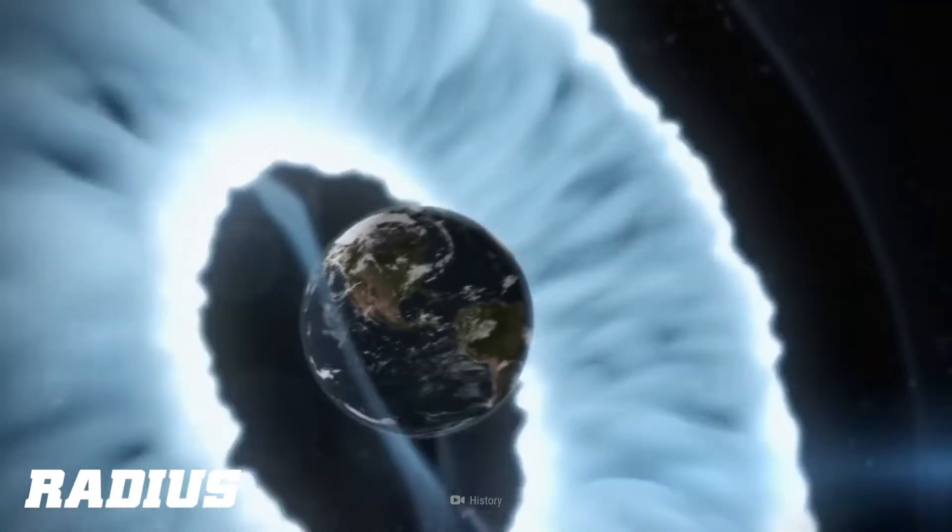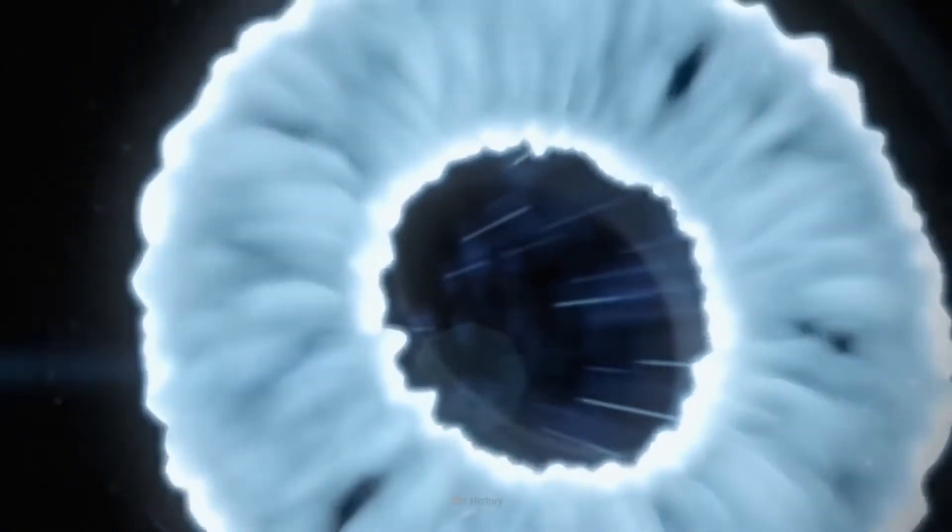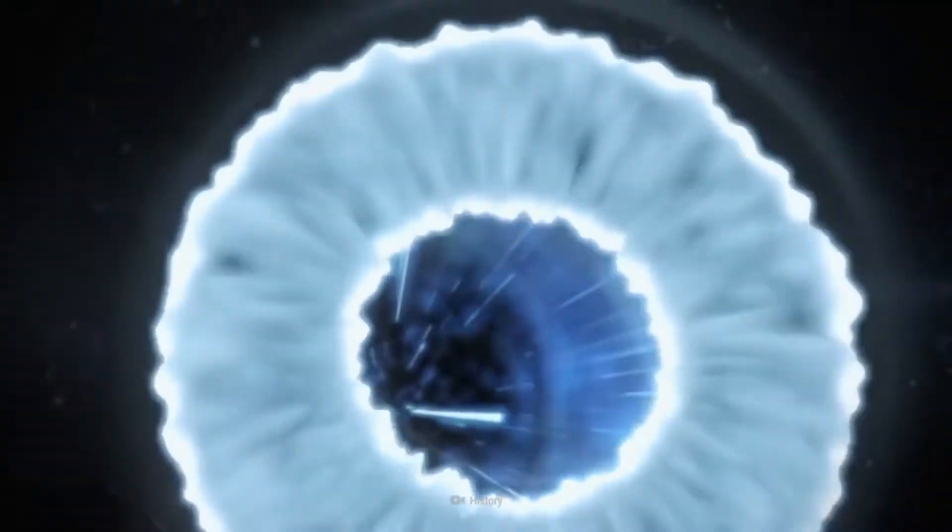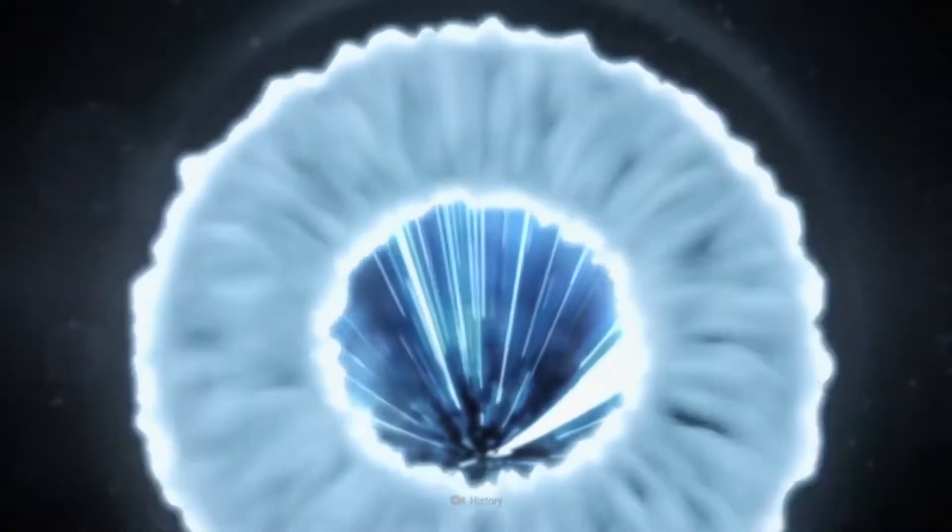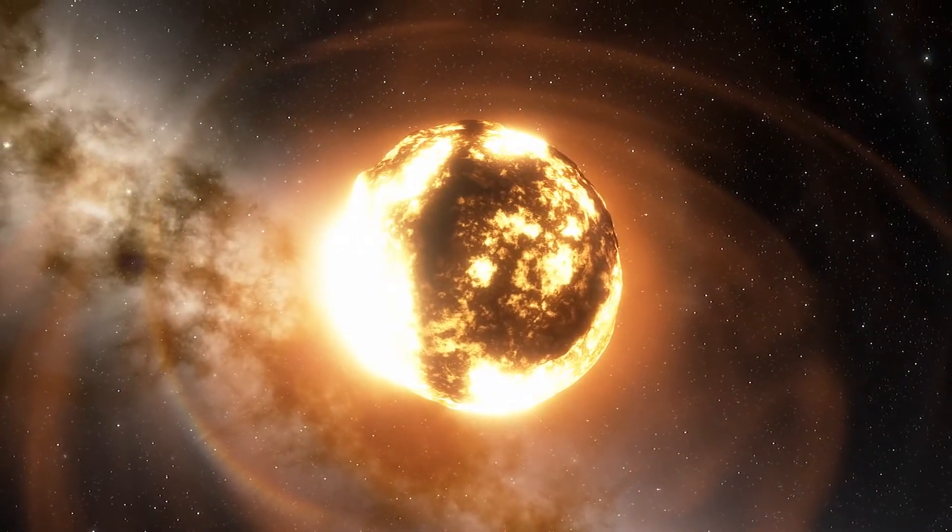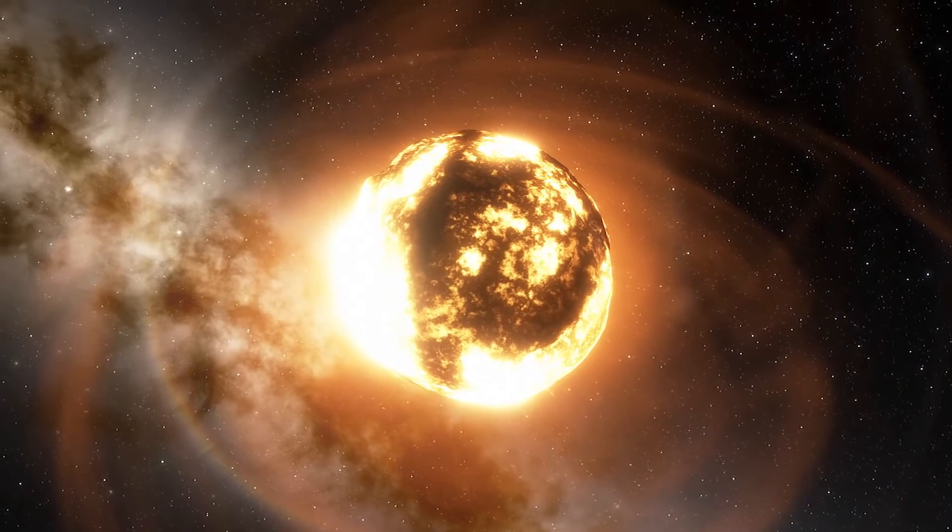Radius: UY Scuti is estimated to have a radius of approximately 1,700 times that of our Sun. This means that if UY Scuti were to replace our Sun, its outer surface would extend beyond the orbits of Jupiter and Saturn, reaching a distance of around 1.2 billion kilometers.